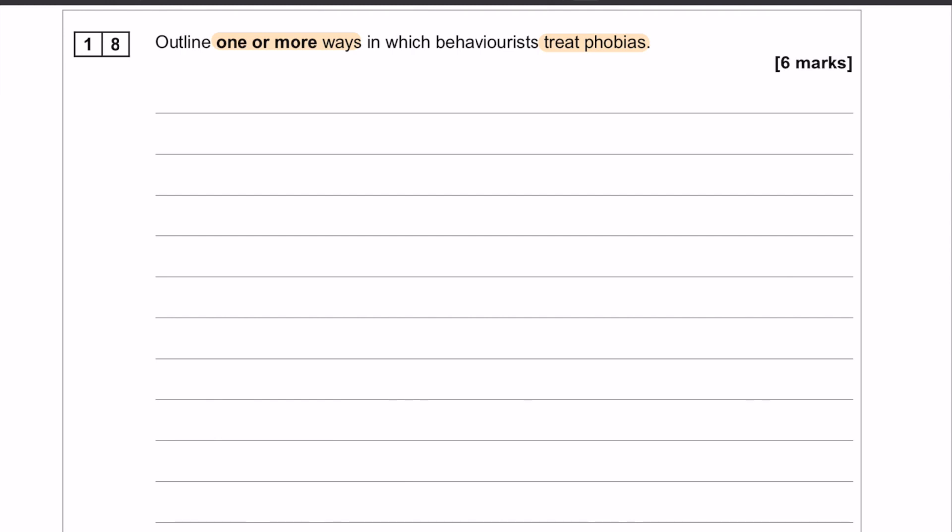This will be left up to everybody individually, it will depend on how much you feel like you can write for the two ways that you know for treating phobias. So your choices are systematic desensitization and flooding. Both of them you could get six marks if you could get six marks for just writing about either of them.